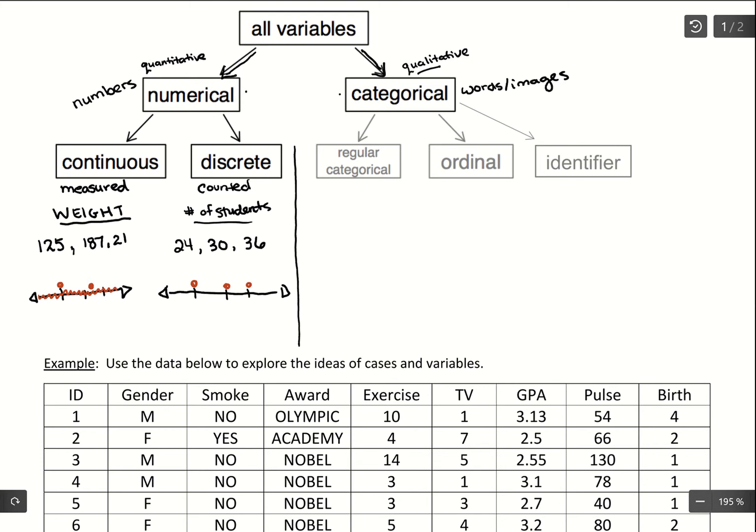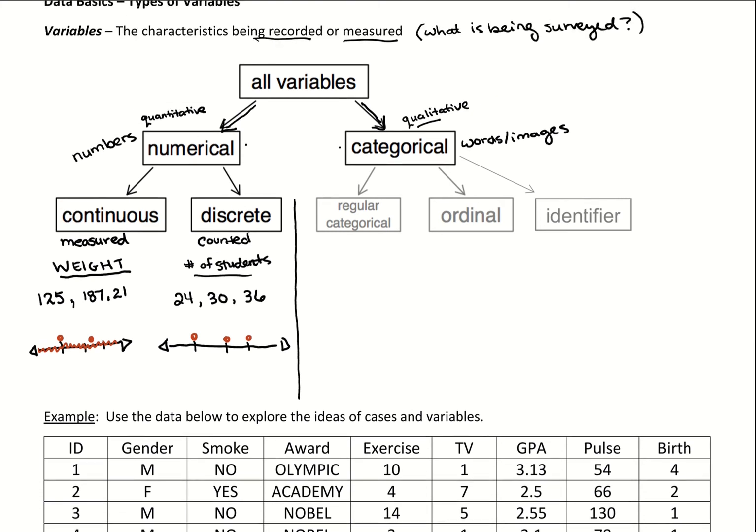For categorical data, there's these three different categories. There's regular categorical, which really you can just call categorical. This could be words like yes, no, collecting information about weather. Maybe we say cloudy or sunny. So we have information in words or you could have pictures. So cloudy versus sunny. Those would be regular categorical.